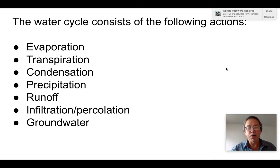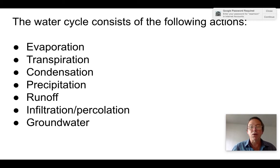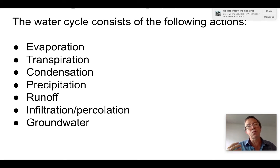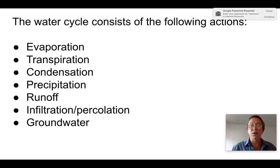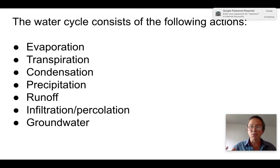Here are the parts of the water cycle. You have evaporation and transpiration — that's how water gets into the air. Condensation is when water droplets begin to form. Precipitation is when water comes out of the air. Runoff is when water flows across the surface of the Earth. And infiltration is when water moves into the ground, where it becomes groundwater.